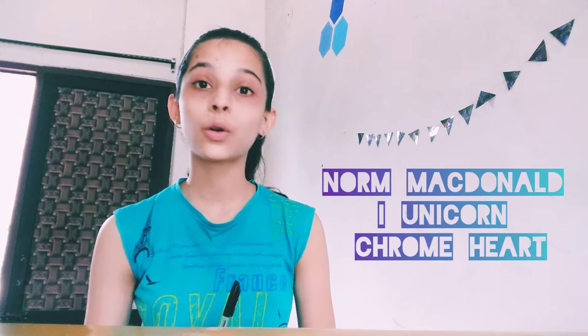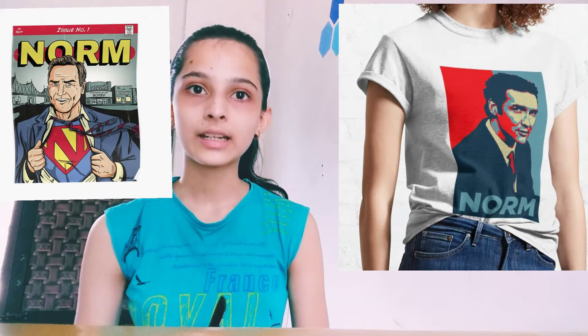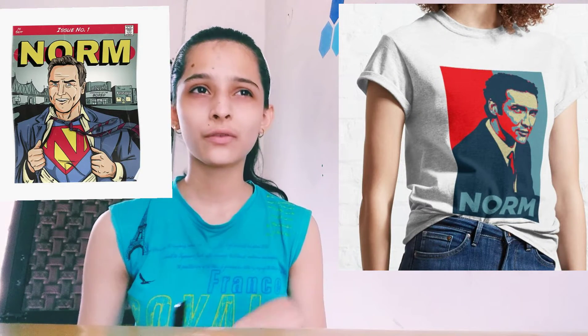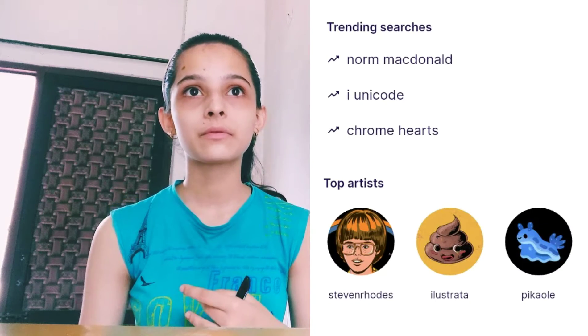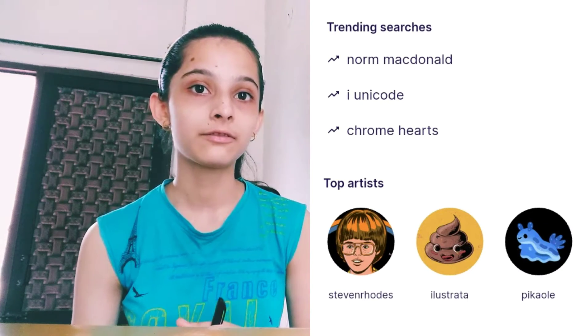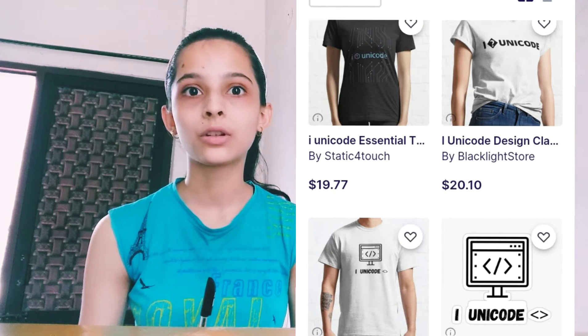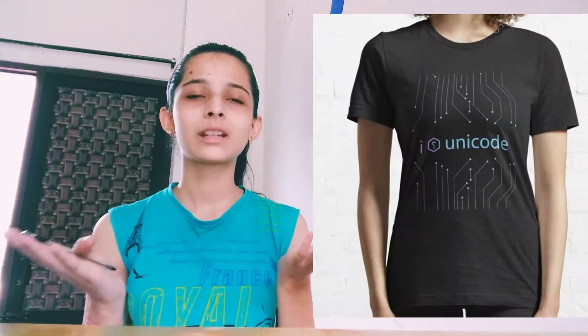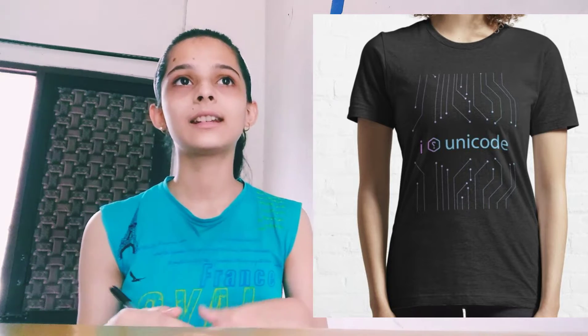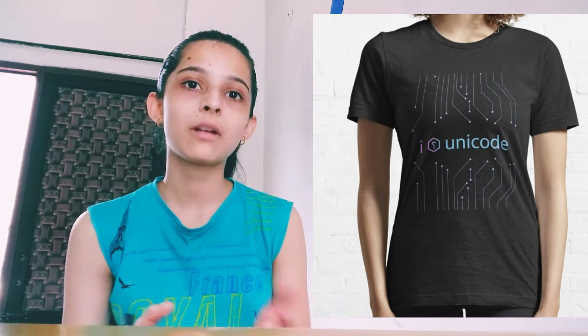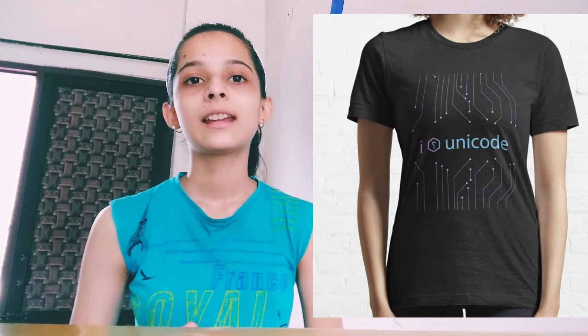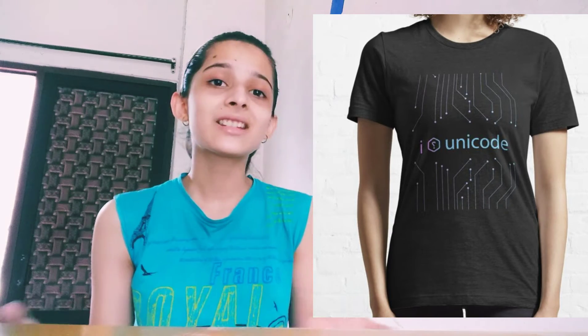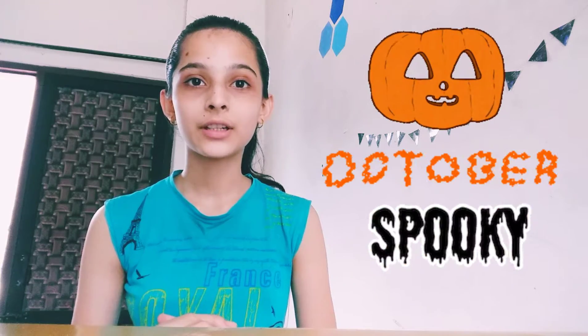This week, Norm McDonald, i unicode, and Chrome Heart are the trending topics. I don't know so much more about Norm McDonald or Chrome Heart, but Instagram is completely filled with i unicode — it simply just says 'i', then sometimes a question mark, sometimes a different sign, and then just 'unicode'.